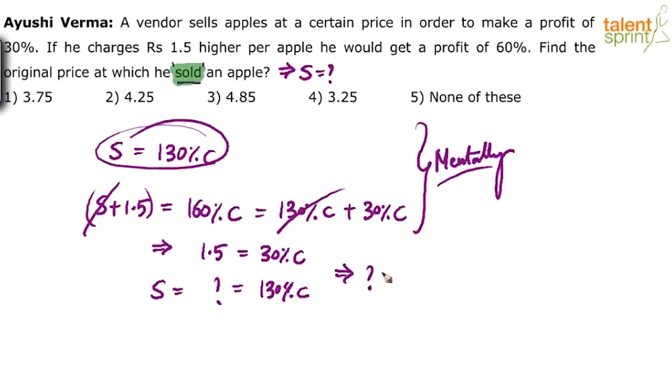From this, what do we get? The question mark will be equal to 130% into 1.5 by 30%. Of course, C and C gets cancelled, percentage also gets cancelled. Do the simplification. 1.5 by 3 is 0.5, 0.5 into 13 is 6.5. So the selling price is 6.5 rupees per apple.